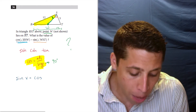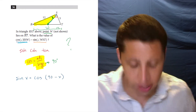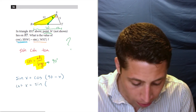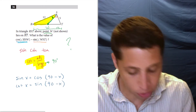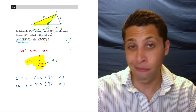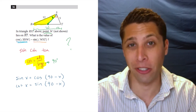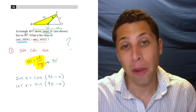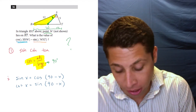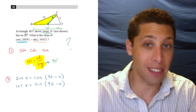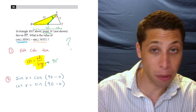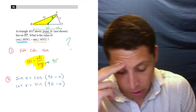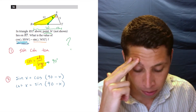I know through experience that if SOHCAHTOA doesn't work for a trig question, there are two other formulas probably being tested — not because I'm good at trig, but because I'm good at the SAT. Those formulas are: sine of x equals cosine of (90 minus x), and cosine of x equals sine of (90 minus x). About 90% of trig questions use SOHCAHTOA, but if that fails, write these two things down and see if you can make them fit.